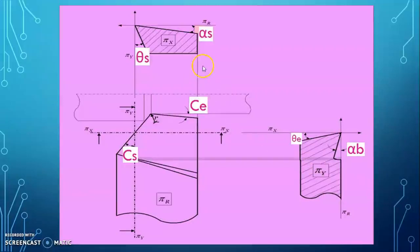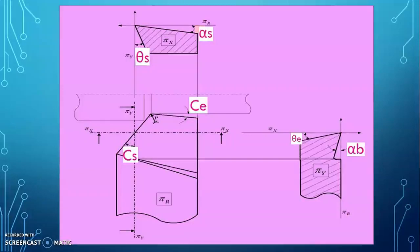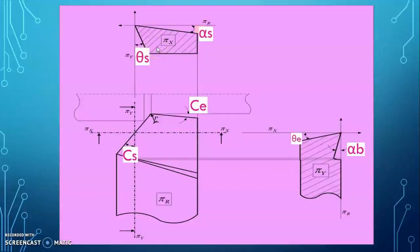The next two angles are the relief angles, also called clearance angles. The principal flank — whether side flank or end flank — is ground so that it is not in contact with the workpiece. In the longitudinal plane, the principal flank makes an angle called the side clearance angle or side relief angle, denoted as theta-s.